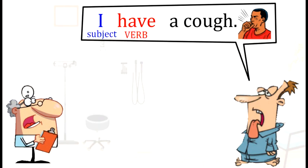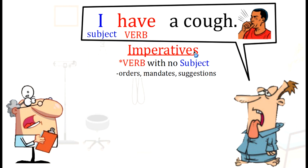Alright, now it's time for our grammar. And today's grammar is imperatives. Imperatives are verbs with no subject. We use imperatives for orders, mandates, and suggestions. Let's look at this sentence: Mr. McDonald says 'I have a cough.' This is a normal sentence in English because we have the subject 'I' and the verb 'have.' Normal sentences always use a subject for the verb.